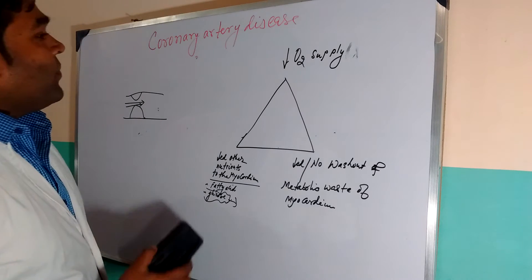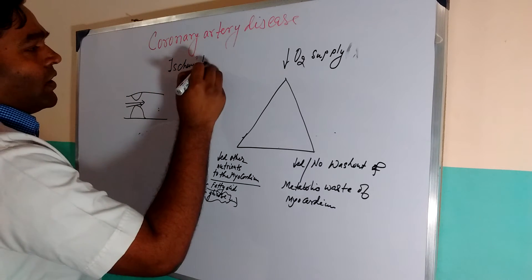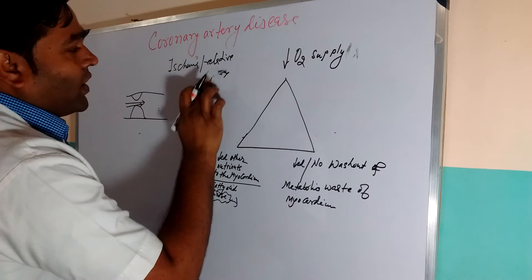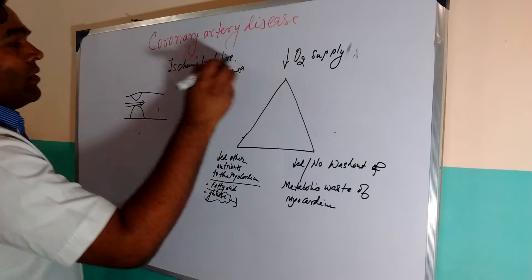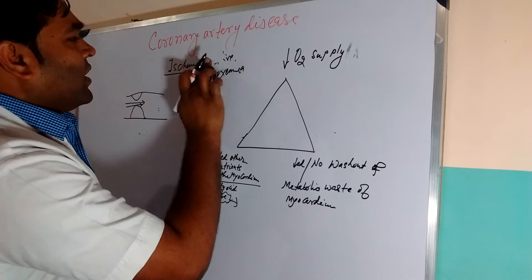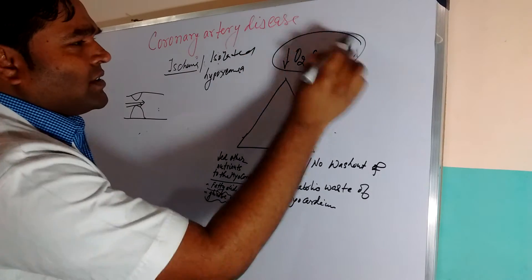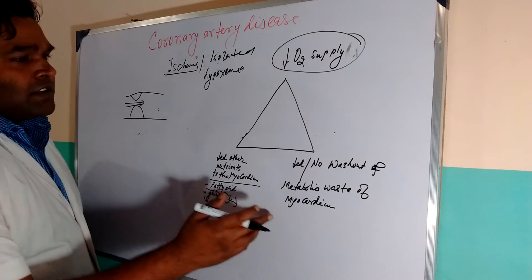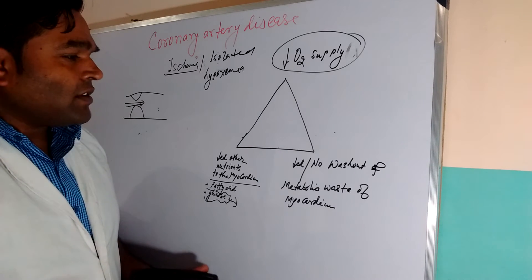Ischemia is more dangerous than isolated hypoxemia. In isolated hypoxemia, only oxygen supply is disturbed. But in ischemia, all three things are disrupted — oxygen supply, nutrients, and metabolic waste washout — all of which are important for the survival of the myocardium.